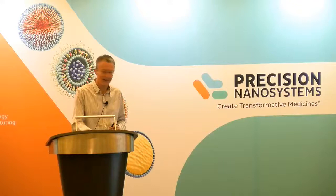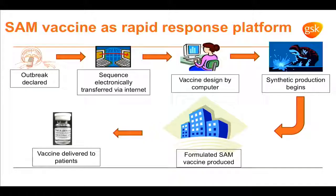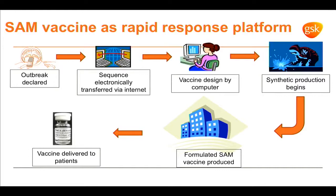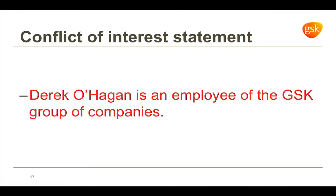The concept is: what could SAM or RNA vaccines be? Maybe it's a rapid response — when an outbreak is declared and the sequence becomes available, the vaccine can be designed in silico and production can happen quickly. That's maybe where SAM in particular has its most valuable role to play. I'm an employee of GSK Vaccines, and that must be taken into consideration. Thank you for your attention.